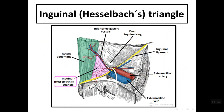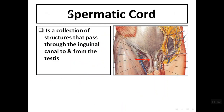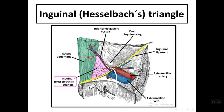An important triangle near the inguinal region is called the inguinal or Hesselbach's triangle. It is formed by the lateral border of the rectus abdominis muscle, the inguinal ligament, and the inferior epigastric vessels. This triangle is important clinically because it is related to the formation of inguinal hernia.